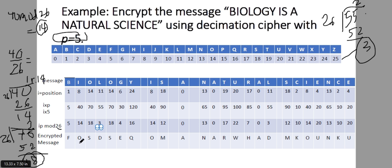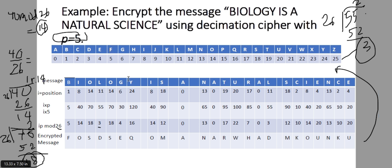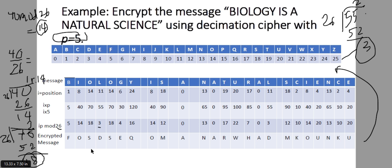Therefore the encrypted message uses these values. 5 is F, 14 is O, 18 is S, 3 is D, 18 is S, 4 is E, 16 is Q, and so on. Therefore the encrypted message for 'Biology is a natural science' is: F O S D S E Q O M A N A R W H A D M K O U N K U.